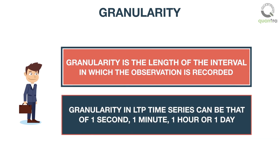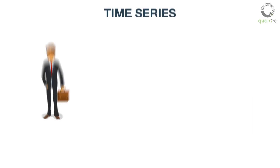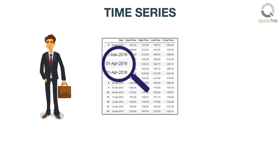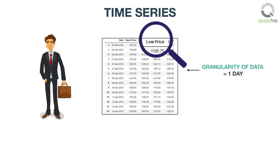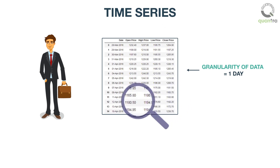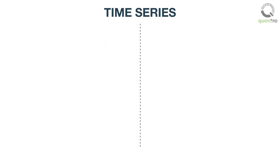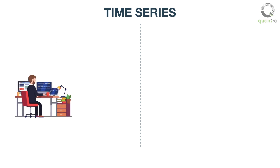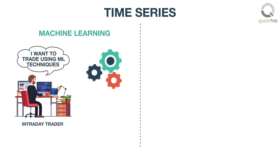Granularity in an LTP time series can be that of 1 second, 1 minute, 1 hour, or 1 day. While analyzing any stock price time series, choosing the correct granularity of data for analysis is very important for optimal results. For instance, let us assume that you are an intraday trader. If you analyze your data using machine learning techniques, choosing a low granular data like that of 1 second LTP is suitable to train your ML algorithm.